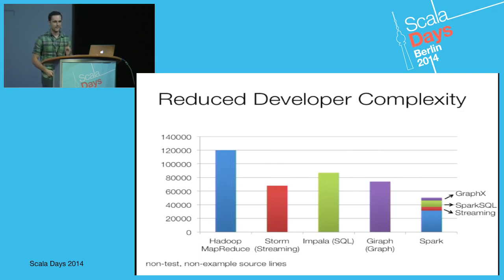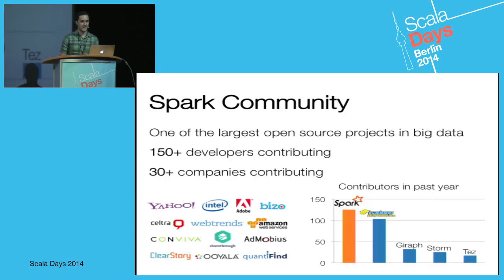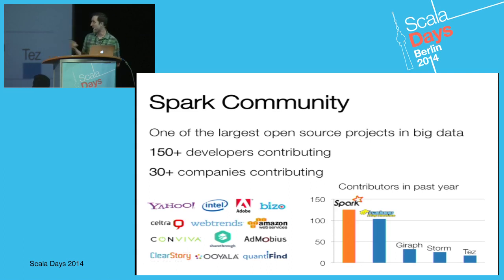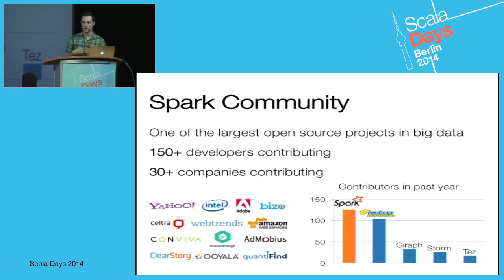This has a significant impact on our community. Spark is one of the largest open source projects in big data. We have 150 developers who have contributed from over 30 companies. In the past year, we started dwarfing Hadoop in the number of contributions from the community, which is pretty exciting. This simple code base that is easy to contribute to is one of the big reasons driving this.